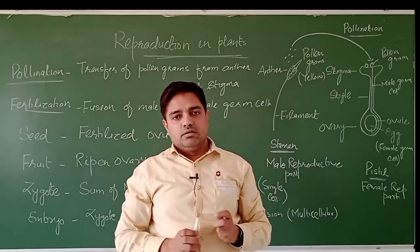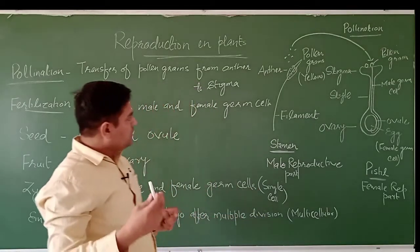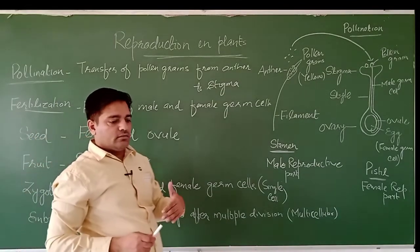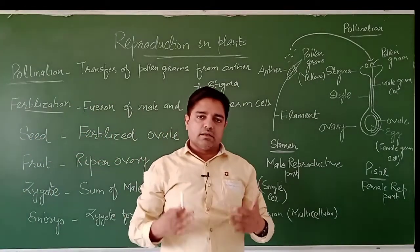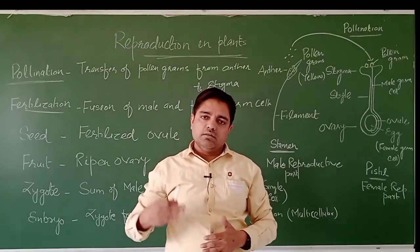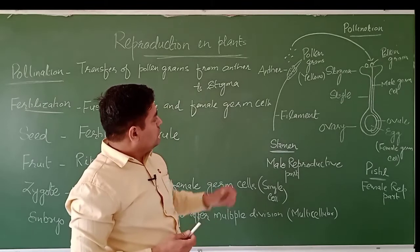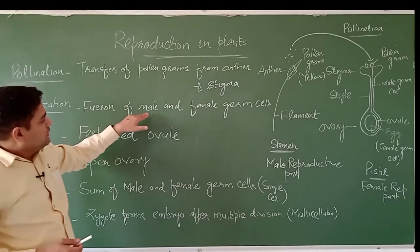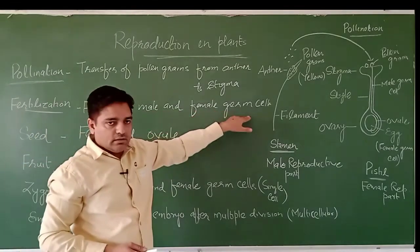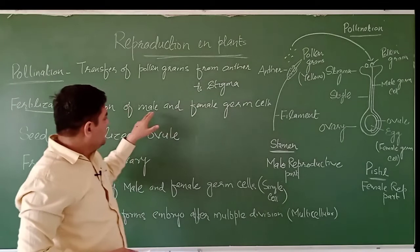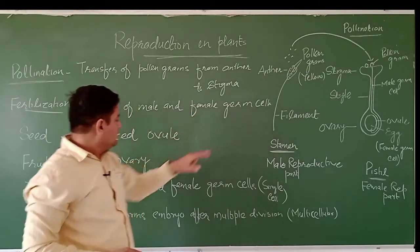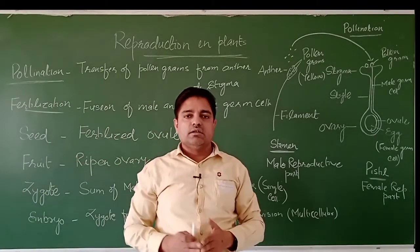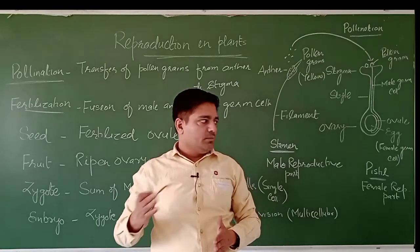After pollination, there is fertilization. The question arises: what exactly is fertilization? Fertilization is the fusion of male and female germ cells. In short, we can say that the fusion of gametes — male and female germ cells — is known as fertilization.